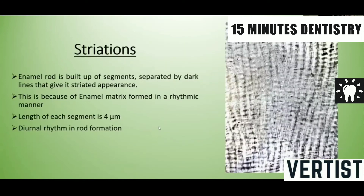Next, the striations of enamel. Each enamel rod is built up of segments separated by dark lines that give it a striated appearance. This is because the enamel matrix is formed in a rhythmic way. The length of each rod segment is 4 micrometers, and this is due to the diurnal rhythm in rod formation.